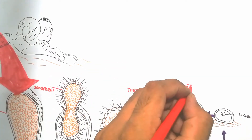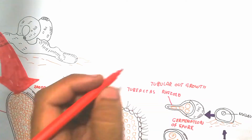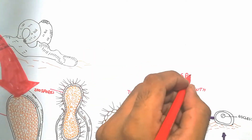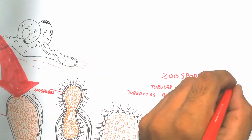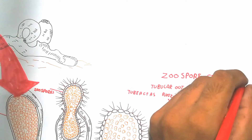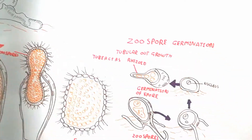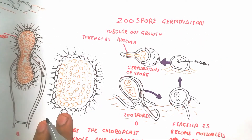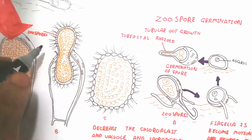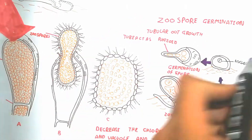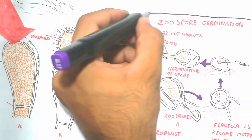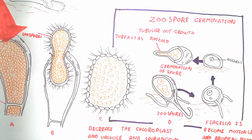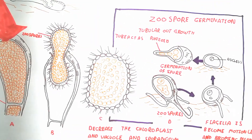Now we will talk about spore germination. The aplanospore is the terrestrial form. The aplanospore is a special type of spore produced by terrestrial species.